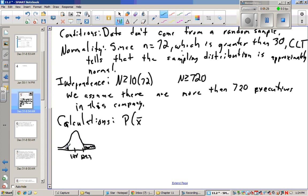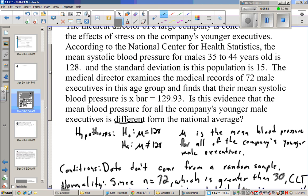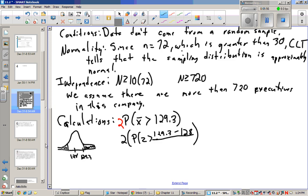It's two-sided, so we're going to look at both of these. So we need to look at 2 times the probability that x is greater than 129.3. So that means it's 2 times the probability that my z-score is greater than 129.3 minus my mean of 128, divided by my standard deviation for the population, which is 15 over the square root of n, which is 72.